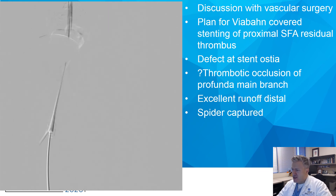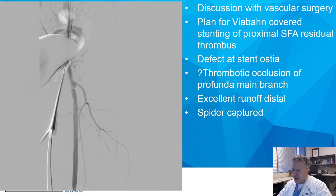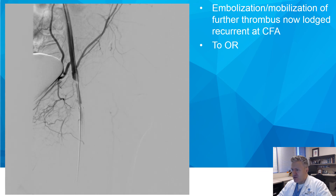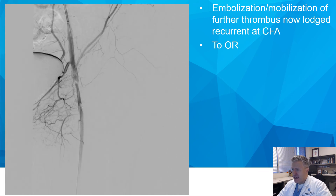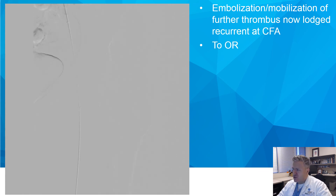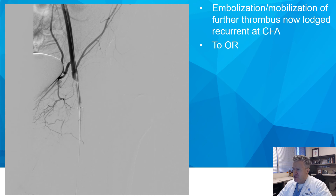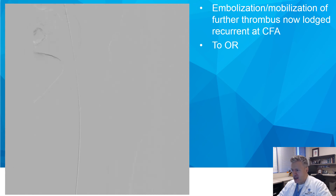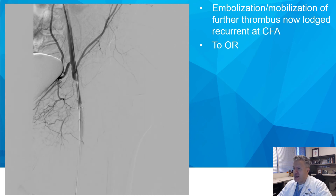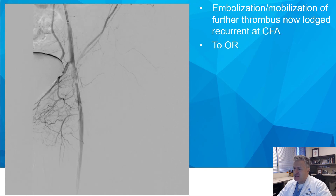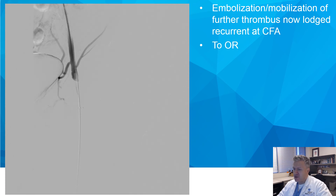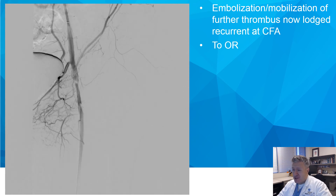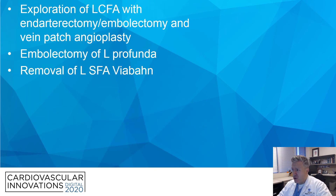There was evidence of large burden of clot within the Spider, and the Spider was then removed. As the Spider was removed again, flow became much worse yet again — evidence of further thrombus now lodged again at the common femoral. The profunda was absent and things had just become severely, severely worse. At this time, the decision was made to proceed to the OR.